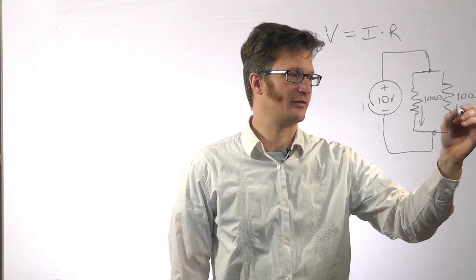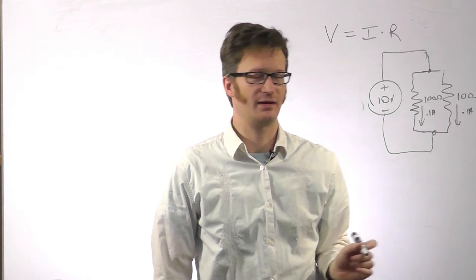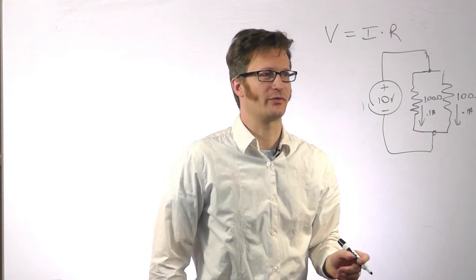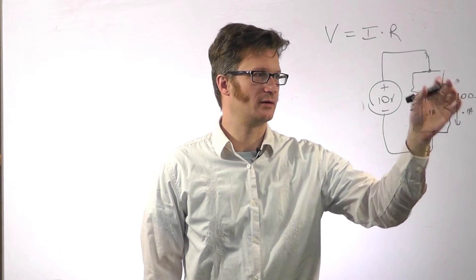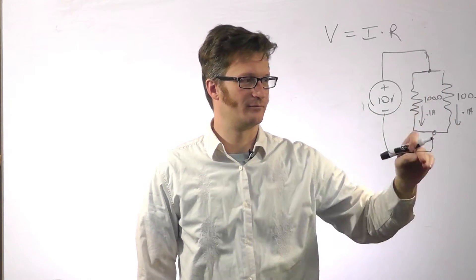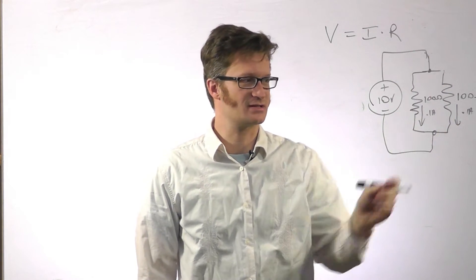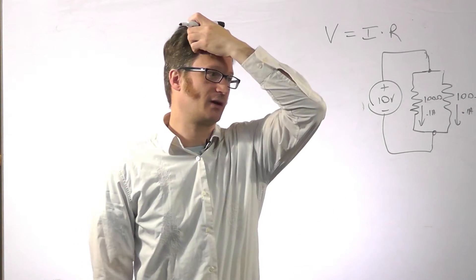We have 0.1 amps here and 0.1 amps here because they're both the same value. So total now, because we've got 0.1 amps going through both branches, all total we have 0.2 amps.